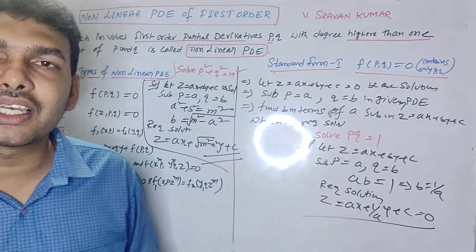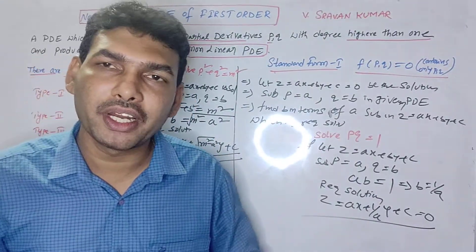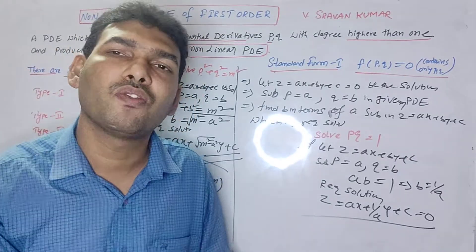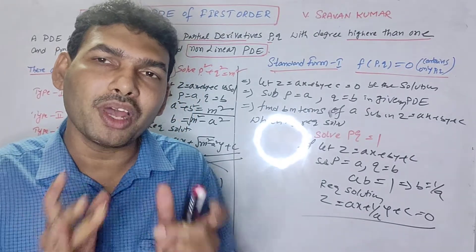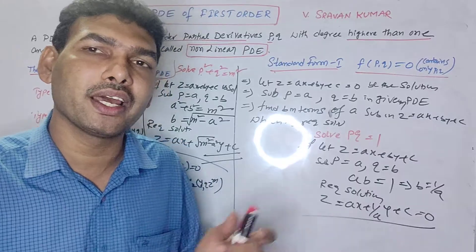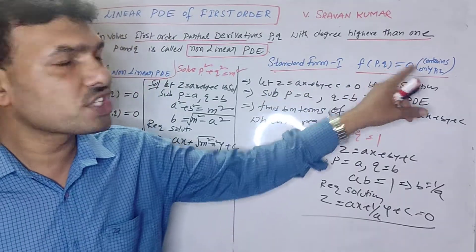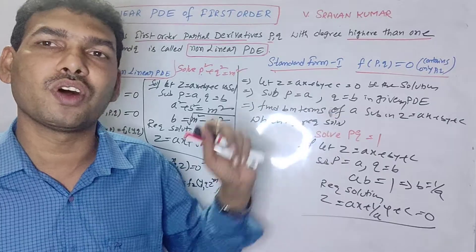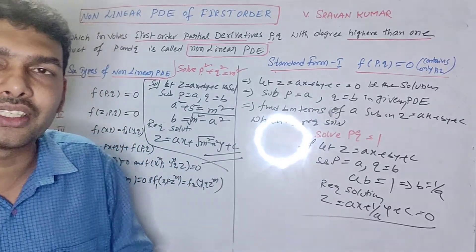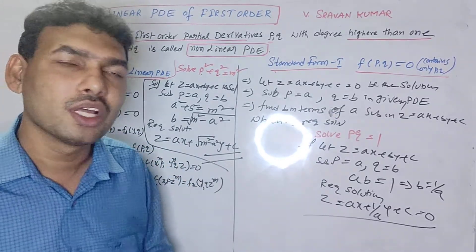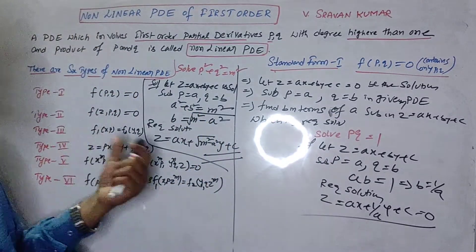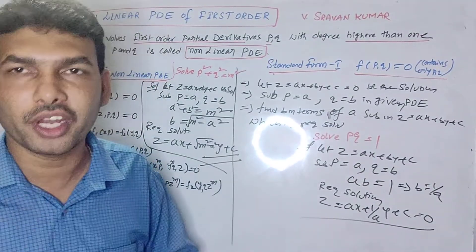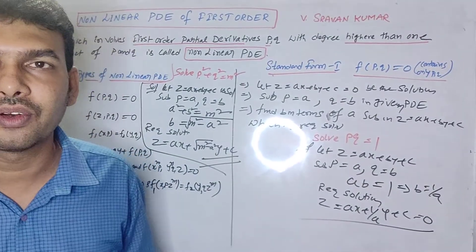To solve a non-linear PDE, first identify the form. If the equation contains only P and Q, it belongs to Form 1. In the next lecture, we will discuss the second standard form, which involves X, Y, Z, P, and Q. Thank you.